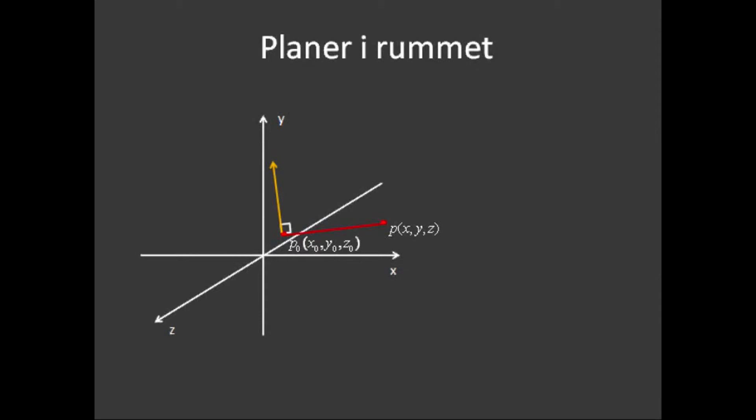Altså en vektor, der sidder vinkelret på den røde vektor, som forbinder punktet P0 samt punktet P. Normal vektoren kalder vi for N, og den har følgende koordinat. Nu er spørgsmålet så, hvad er ligningen for den plan, der både indeholder punktet P og vores kendte punkt P0? Ligningen finder vi simpelthen ved at sætte prikproduktet af normal vektoren samt den røde vektor, lige 0. Og i vektorform har vi altså følgende.